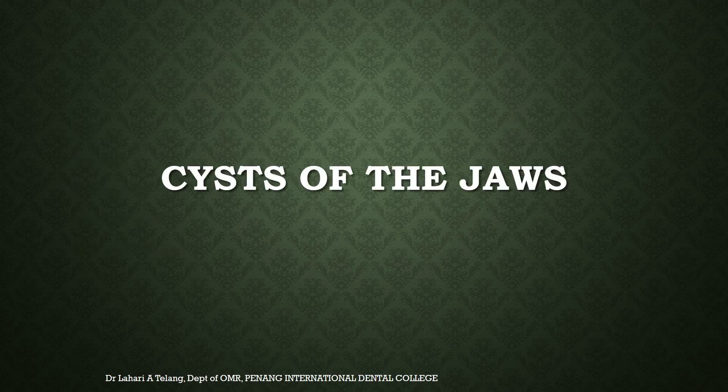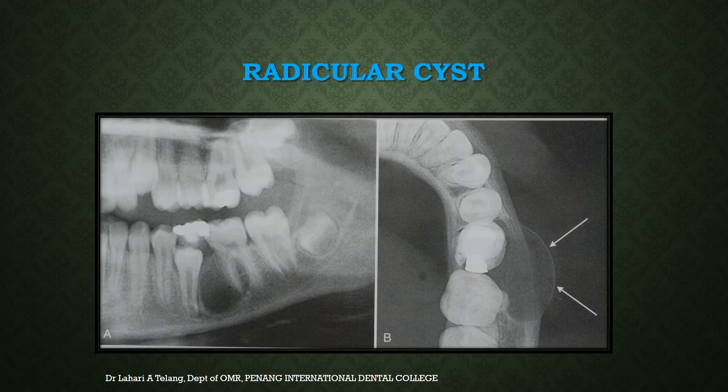Let us first start with cysts of the jaws and their radiographic manifestations. In this lecture I have tried to stress on the radiographic features without going into detail of the cyst itself, the clinical features and other details, which I assume would be covered in another lecture on pathology. Let us start with the simplest and most common cyst of the jaw — the radicular cyst — generally caused by an inflammatory condition like dental caries or pulp involvement.